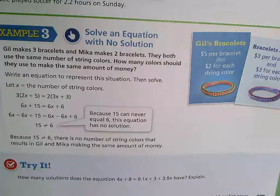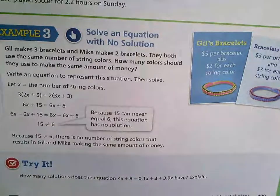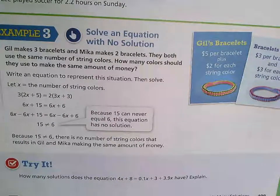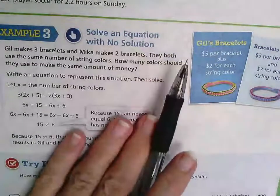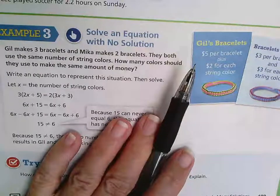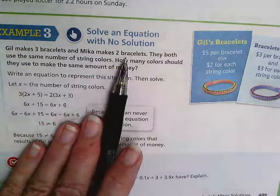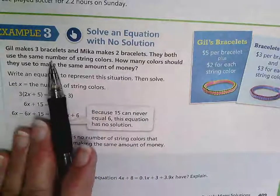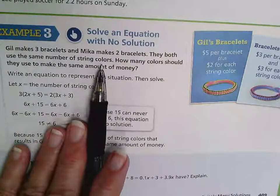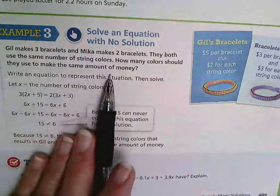Example 3 on page 409: solve an equation with no solution. This is the other situation that might be new to you — an example of a word problem where you could get no solution. It says Gill makes three bracelets and Mika makes two bracelets. They both use the same number of string colors. How many colors should they use to make the same amount of money?